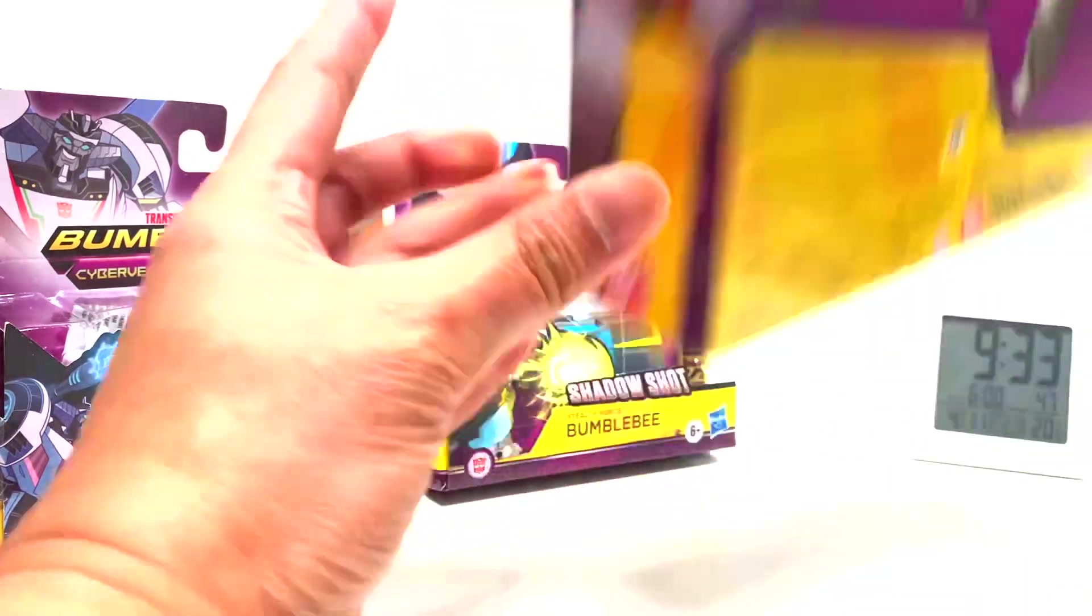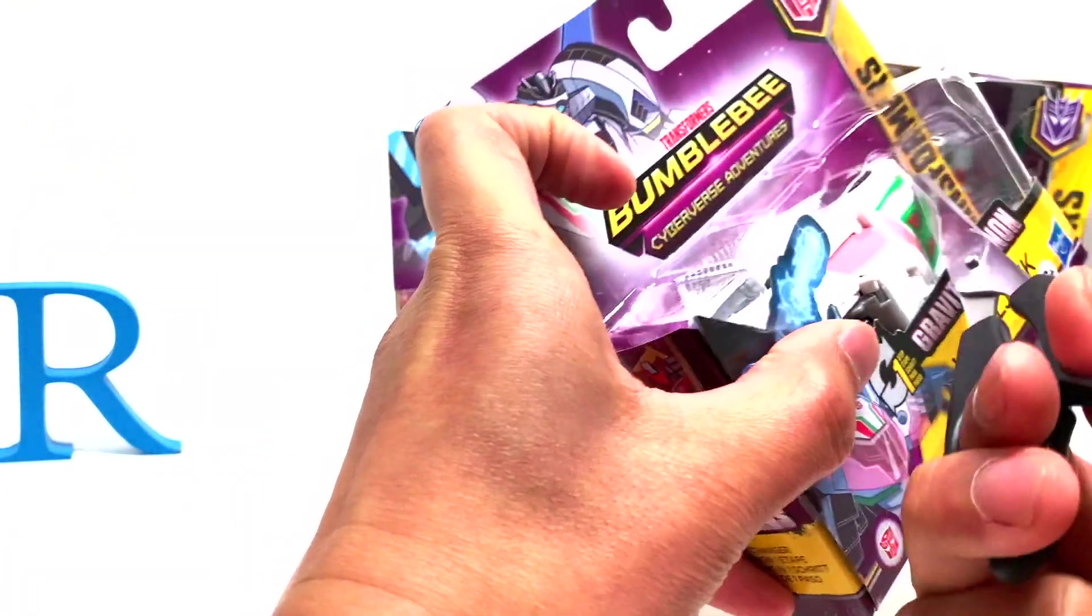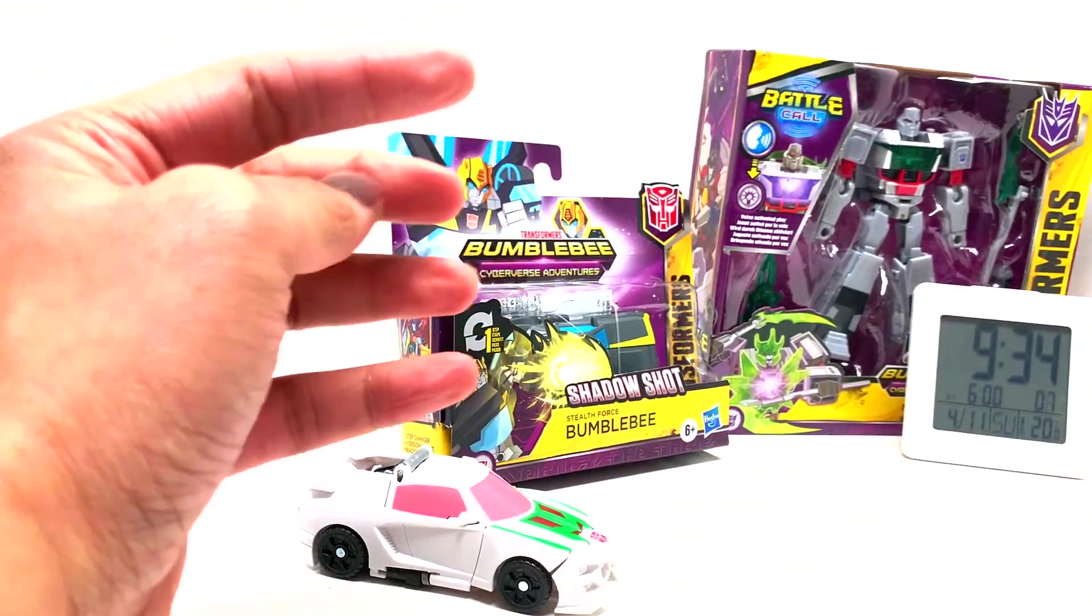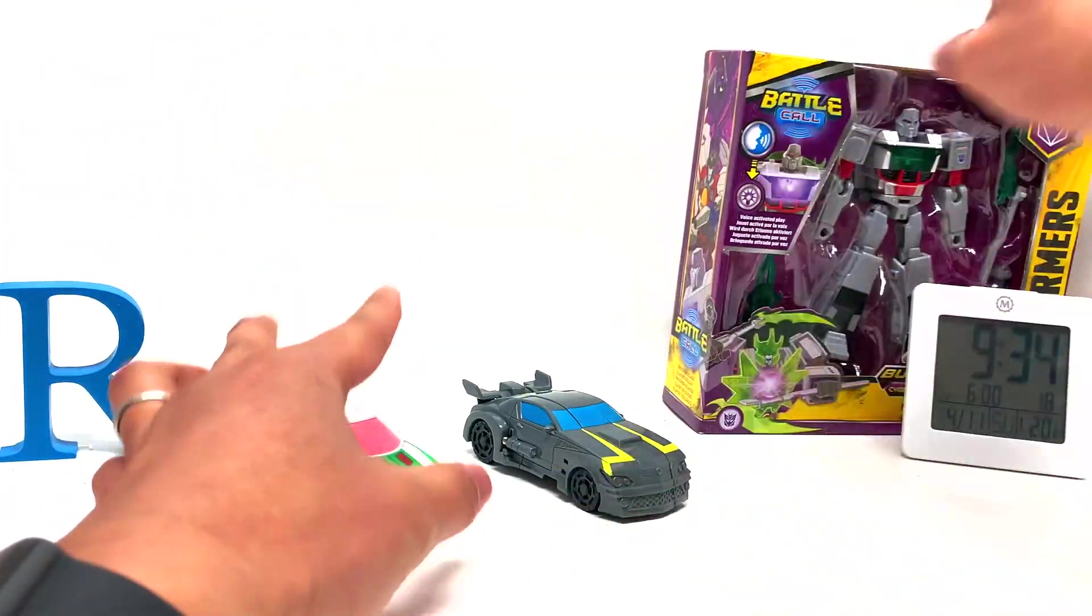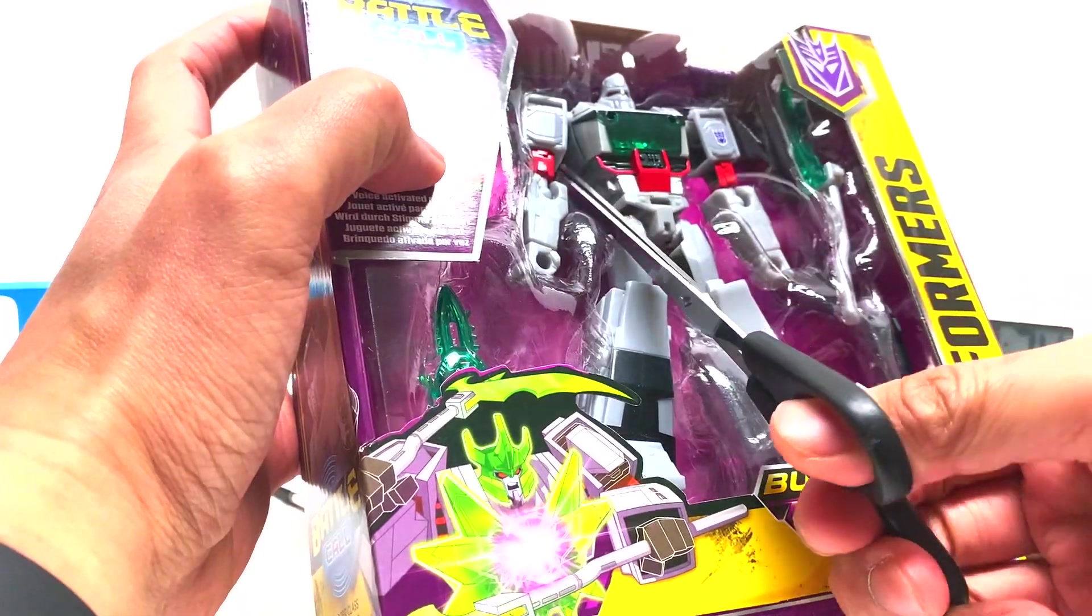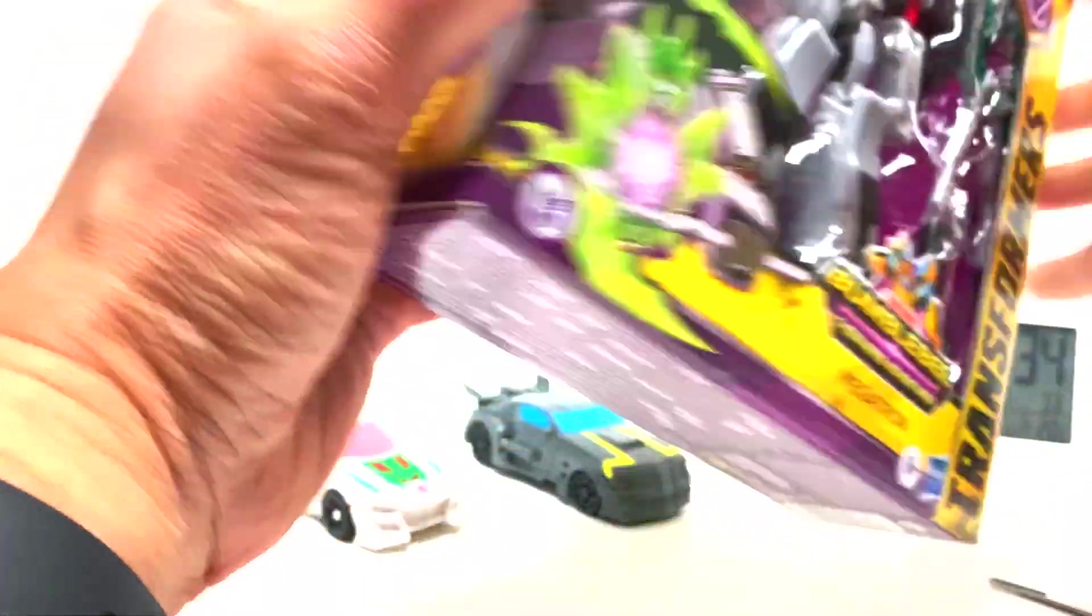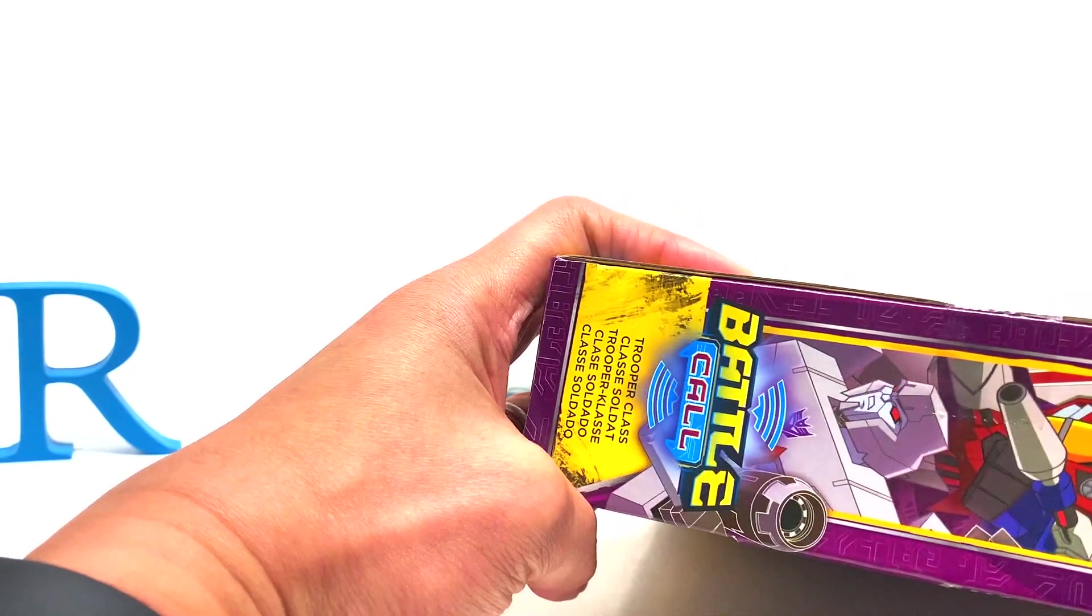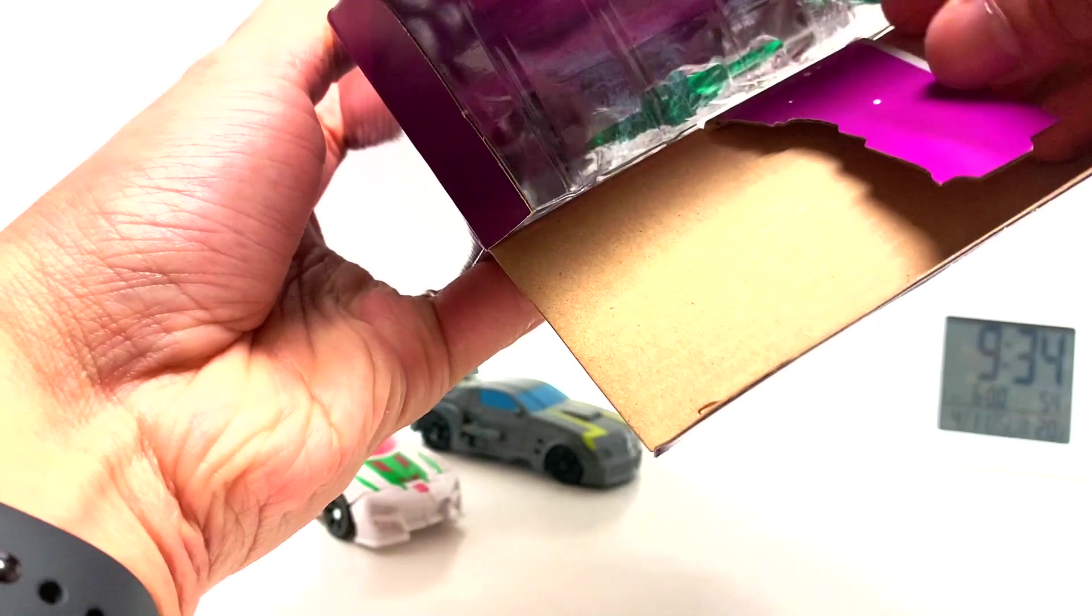Let's just unbox these guys already. Let's start with Wheel Jack. Actually, let's just free them all from their stasis pods so we can get all the packaging out of the way. There you go. And there's Megatron. Oh boy, he's gonna be tough to get out of there. I probably should open the box first. You can open the box from the side.